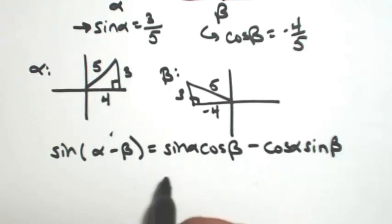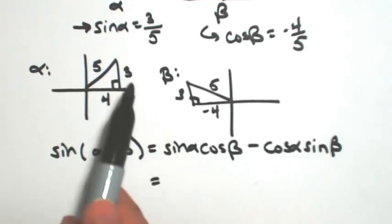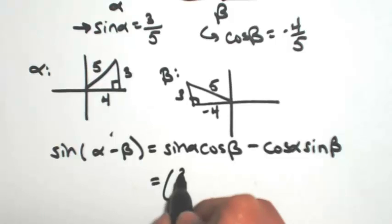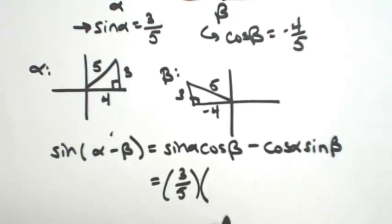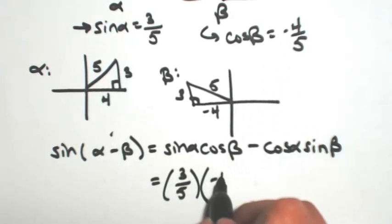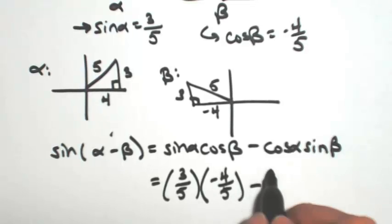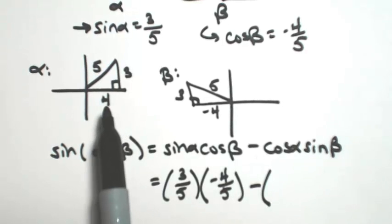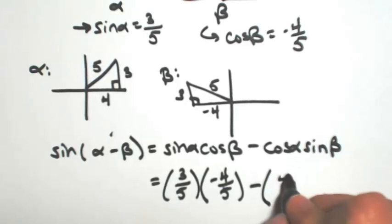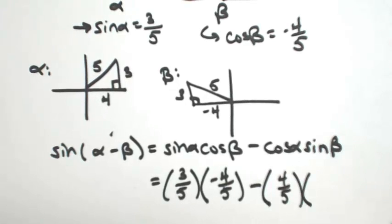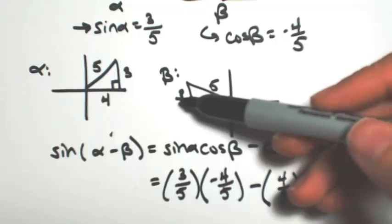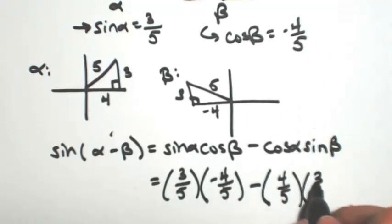From our pictures, we can fill in all of this information. Sine of alpha is 3 fifths. Cosine of beta was negative 4 fifths. Cosine of alpha from the picture for alpha would be 4 fifths. And then sine of beta from the picture would be 3 fifths.